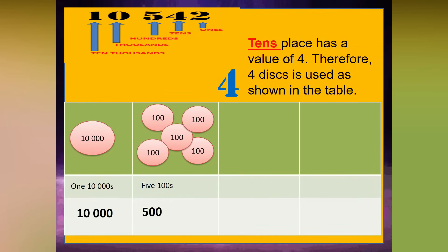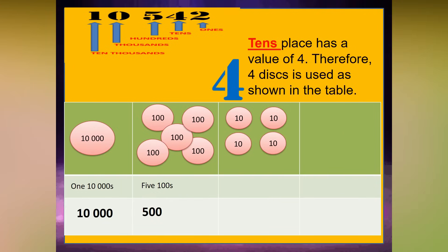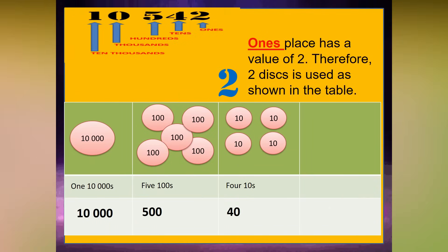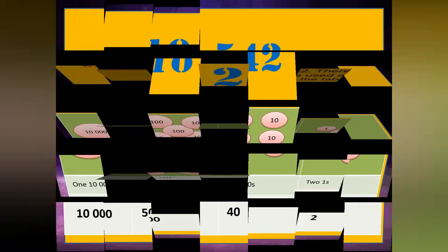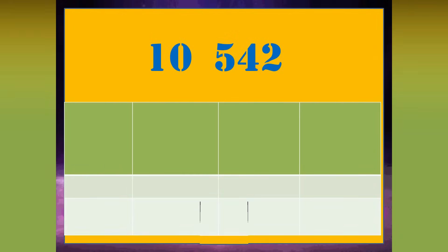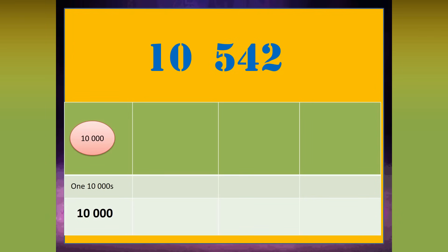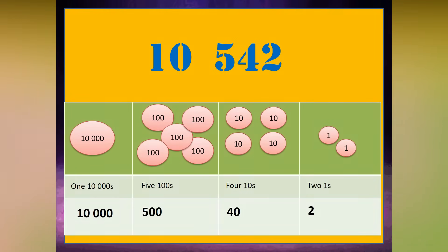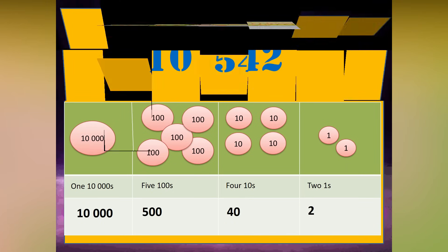The 10s place has a value of 4. Therefore, 4 discs are used as shown in the table. The 1s place has a value of 2. Therefore, 2 discs are used as shown in the table. To visualize 10,542, there is 1 ten-thousand, 5 hundreds, 4 tens, and 2 ones.